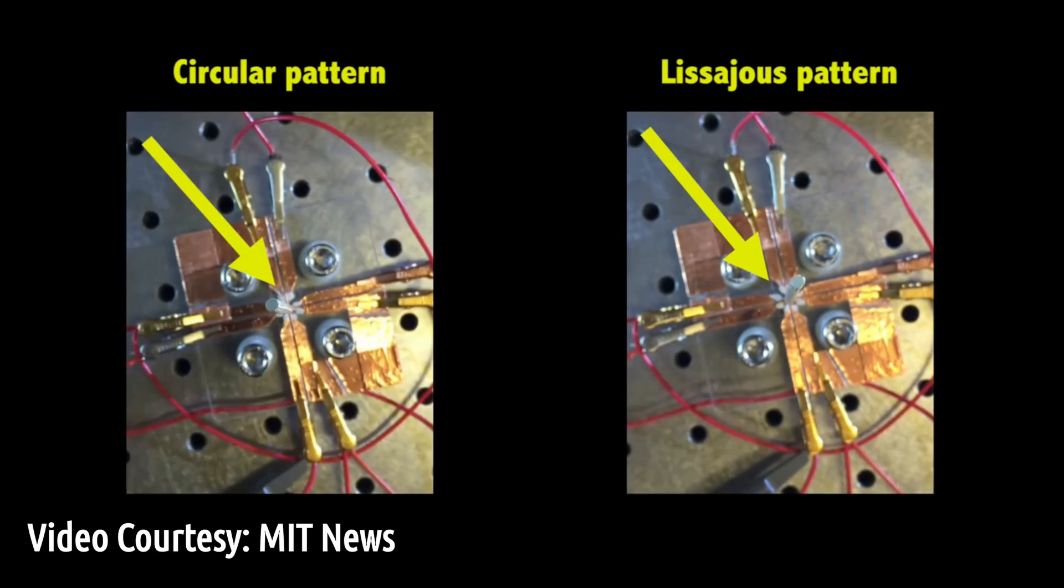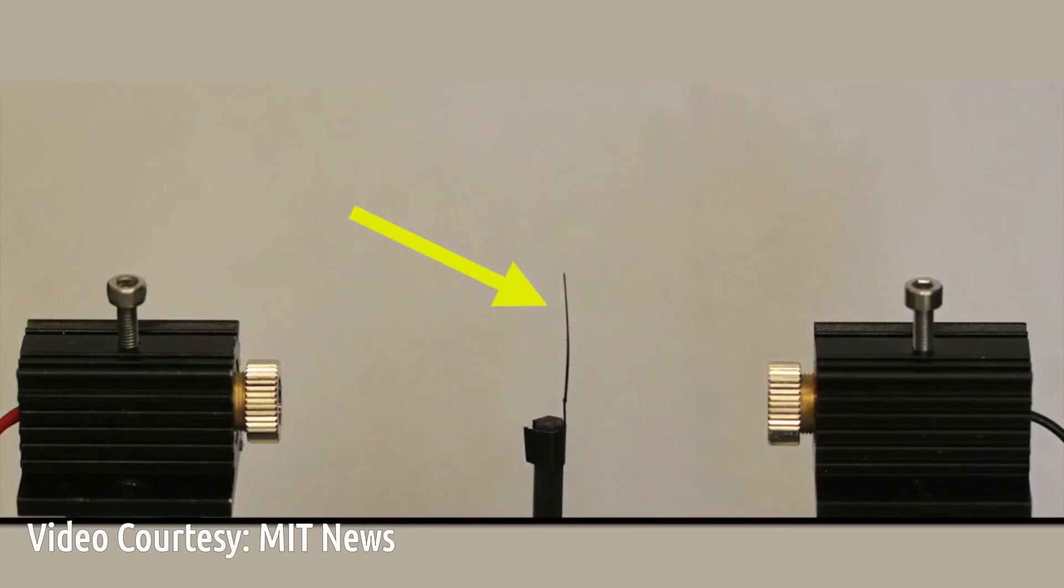Various heat sources can be used on the fibers, including electric resistance heating, chemical reactions, or a laser beam that shines on the filament.